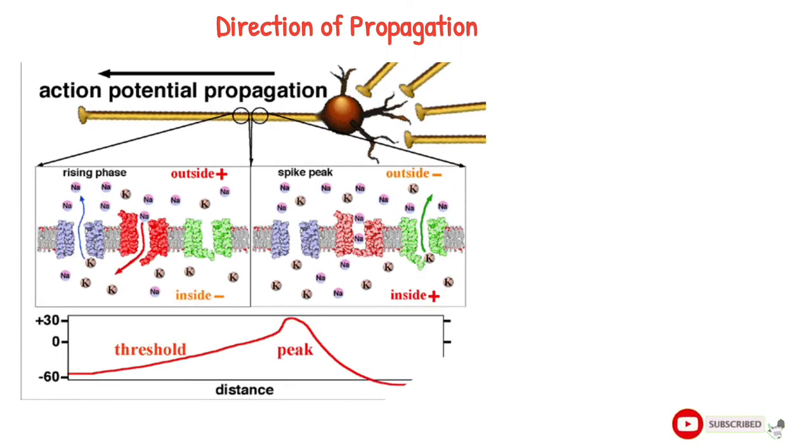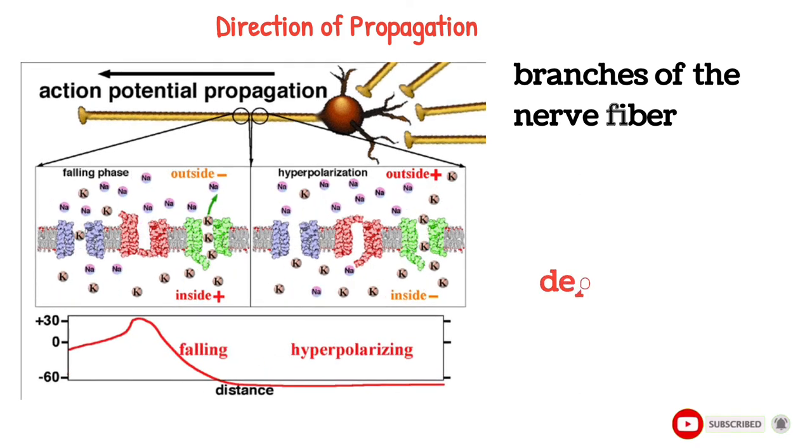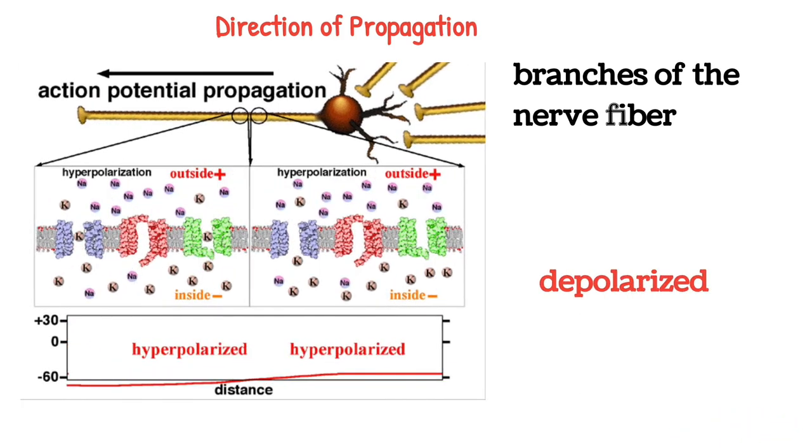Direction of propagation: an excitable membrane has no single direction of propagation, but the action potential travels in all directions away from the stimulus, even along all branches of a nerve fiber, until the entire membrane has become depolarized.